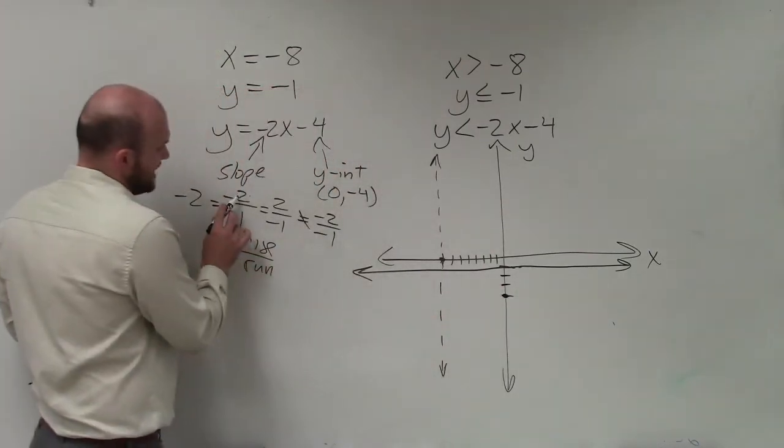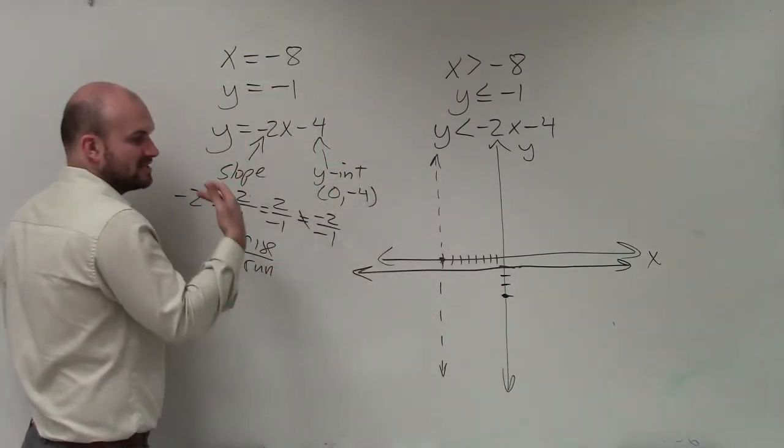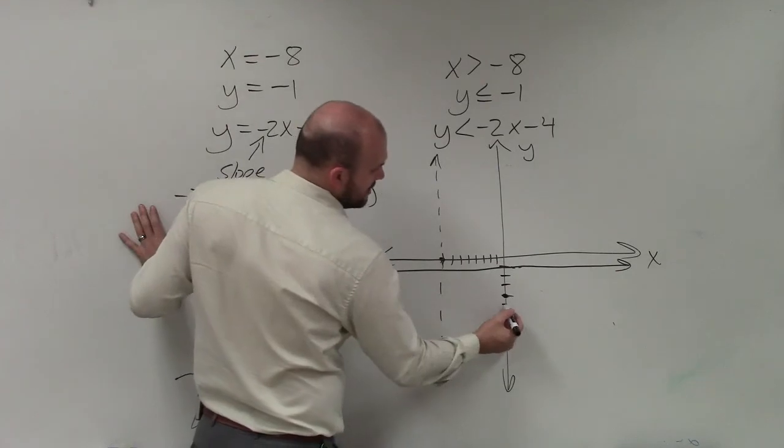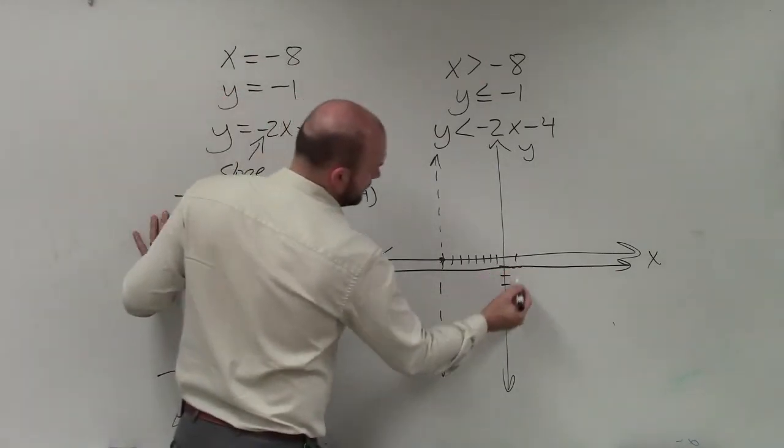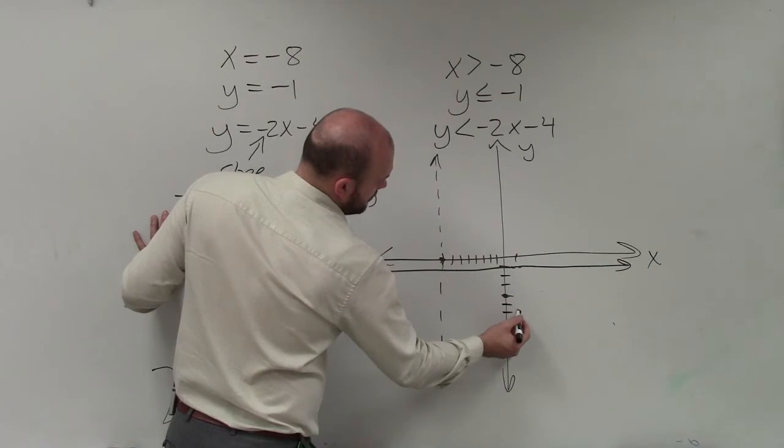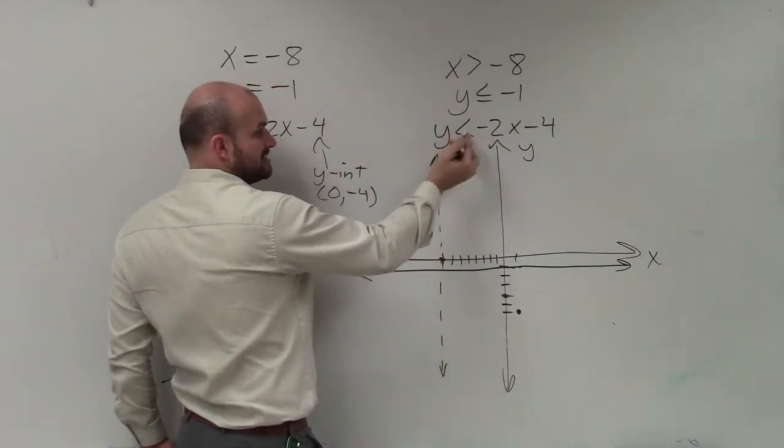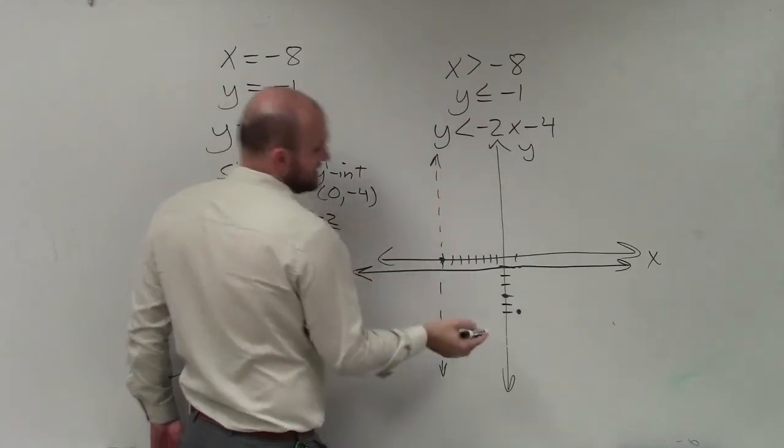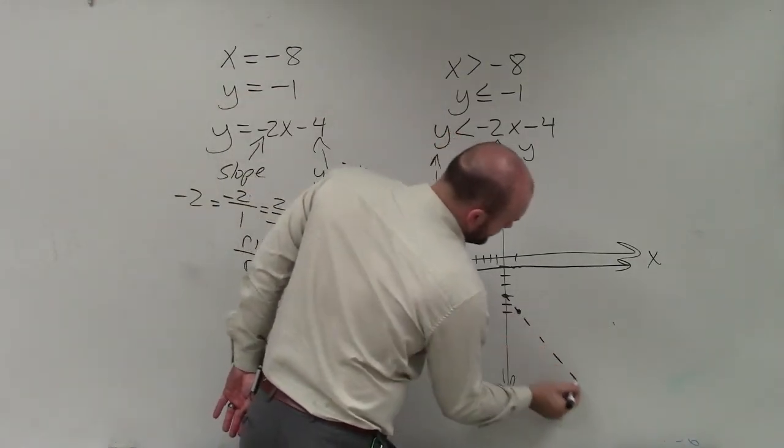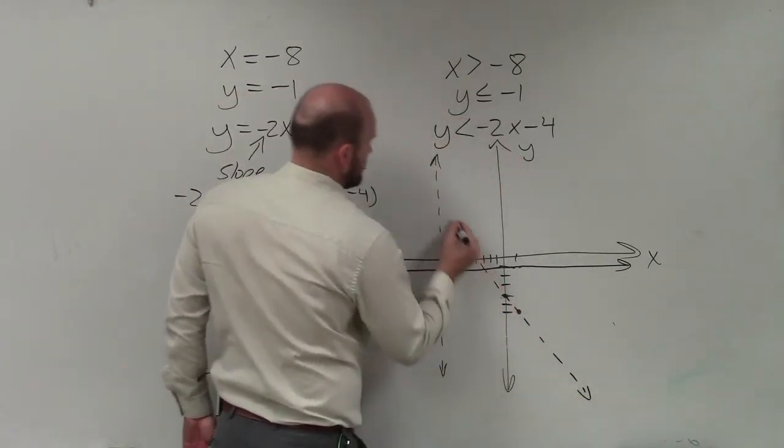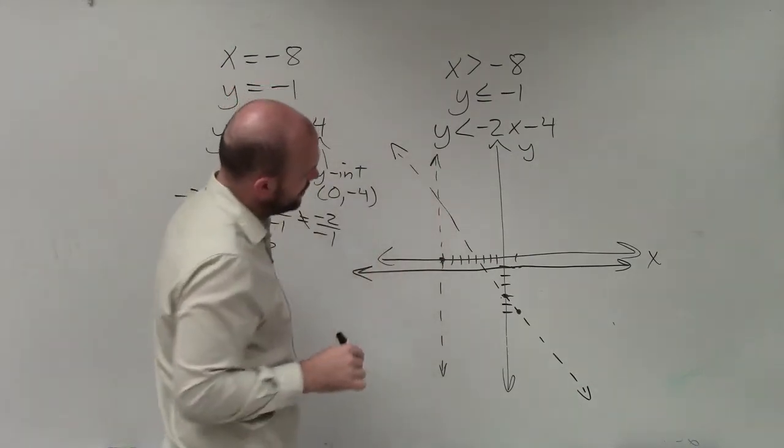Then I'm going to go down 2 because the change in y-coordinates is negative 2 between any two points. So I'm going to go down 2 and then over 1. Then, again, I look at my inequality symbol, and I see that it's less than. So therefore, it's going to be dashed, not a part of my solution. And I'll go ahead and graph it.